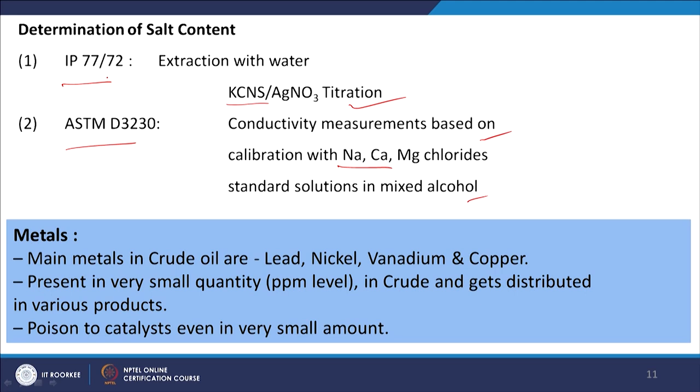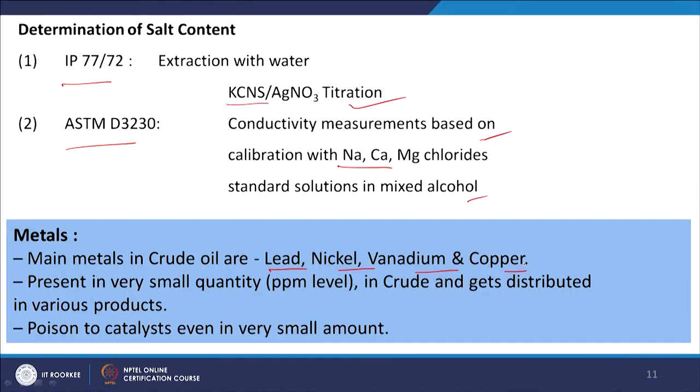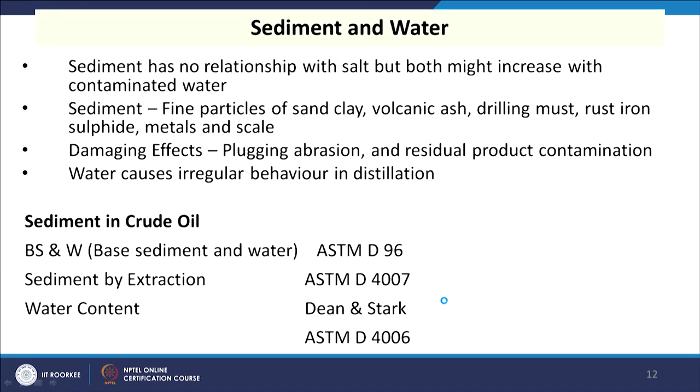Metals present in crude oils are mainly lead, nickel, vanadium, and copper. These contribute to ash when burned — soot and particulates form — and they also poison catalysts. The lesser the metal content, the higher the quality of the crude and its derived products. Metals can be measured by atomic absorption spectroscopy.